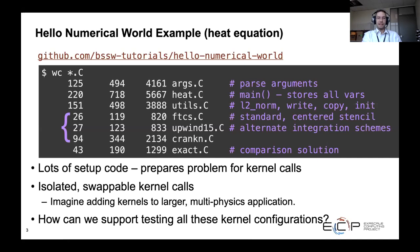When we start to think about testing this sort of setup, the question is how do we support testing all of these different kernel configurations. If we start to change accelerator backends, change systems that we're compiling for, and compilers that we use, all of these things should still work. So ideally we want a testing setup that lets us look at how changes in the code are affecting changes in our results.